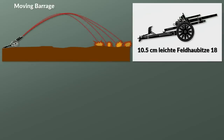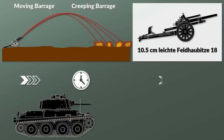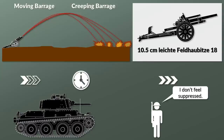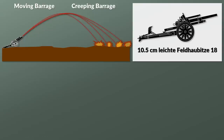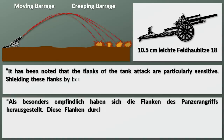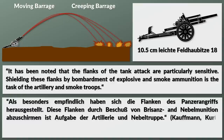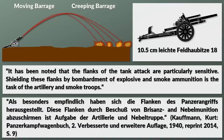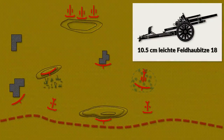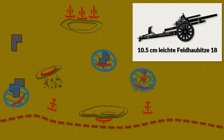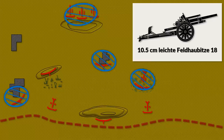Let's look at the supporting arms and their missions, starting with artillery, which is a very important element. One way to cover an attack is a moving barrage, usually called a creeping barrage. Yet with a Panzer attack there is a major issue: if the barrage moves too slowly it slows down the Panzers, but if it moves too fast it is insufficient to suppress the enemy properly, so artillery was used differently. Kaufmann notes in 1940 that the flanks of the tank attack are particularly sensitive, and shielding these flanks by bombardment with explosive and smoke ammunition is the task of the artillery and smoke troops. Additionally, locations the enemy will prepare for defense — areas passable by tanks, forest areas, and evacuated villages — must be suppressed by artillery. Furthermore, the enemy artillery must be suppressed to not interfere with the assembly of the tanks prior to the attack.